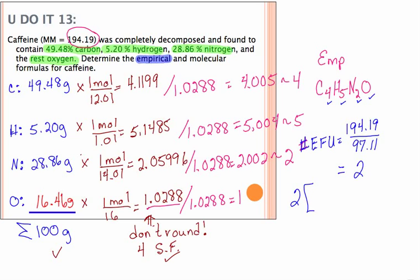And what that means is that we have 2 of these empirical formula units, 2 of the links in our chain. So what you're going to do with this number 2 is you're going to multiply every subscript by that whole number that we get.